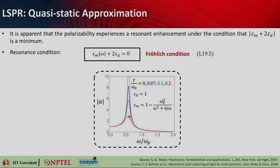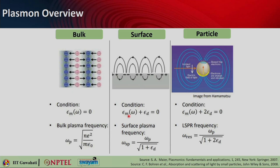Coming back to fill the overall picture: the resonance condition for particle plasmon is ε_m(ω) = −2ε_d, or equivalently ε_m(ω) + 2ε_d = 0. The LSPR frequency is ω_LSPR = ω_p/√(1 + 2ε_d). Comparing across plasmon types: bulk plasmon requires ε_m = 0 at ω_p; surface plasmon gives ω_sp = ω_p/√(1 + ε_d); and particle plasmon gives ω_LSPR = ω_p/√(1 + 2ε_d). The resonance frequencies shift progressively lower as we go from bulk to surface to particle plasmon.